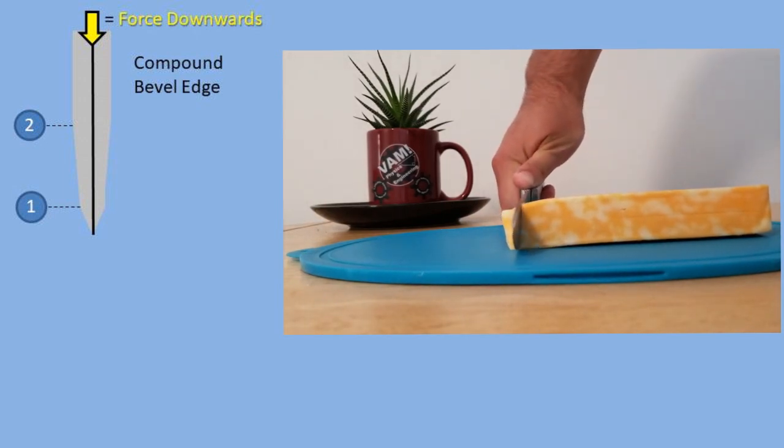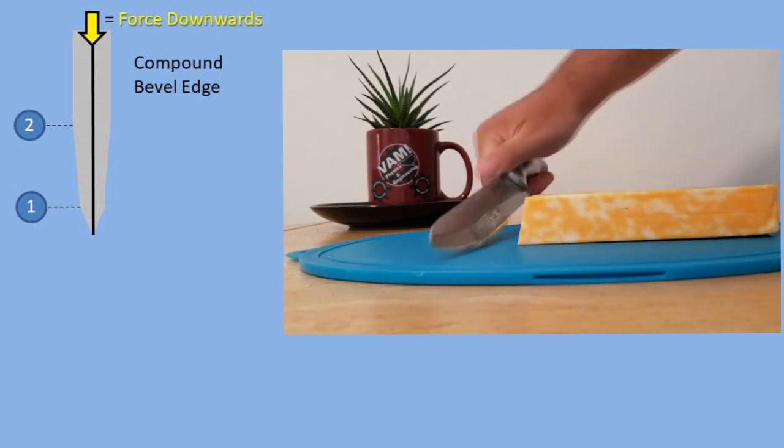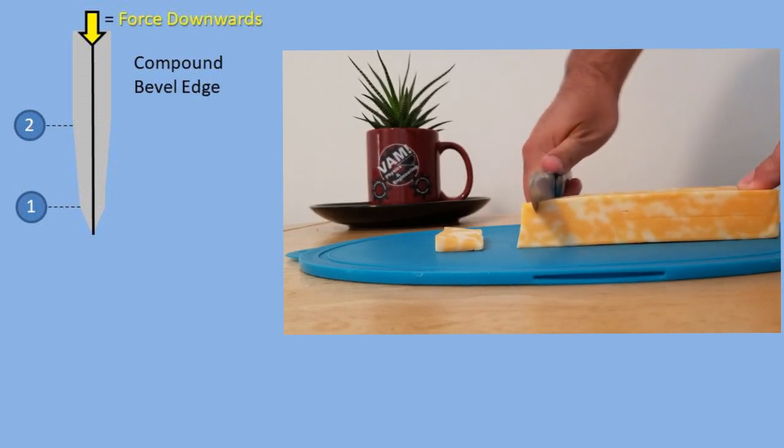The ideal mechanical advantage assumes no losses due to friction, and the compound bevel edge refers to a set of two wedges with two different slopes or inclines on the knife edge.